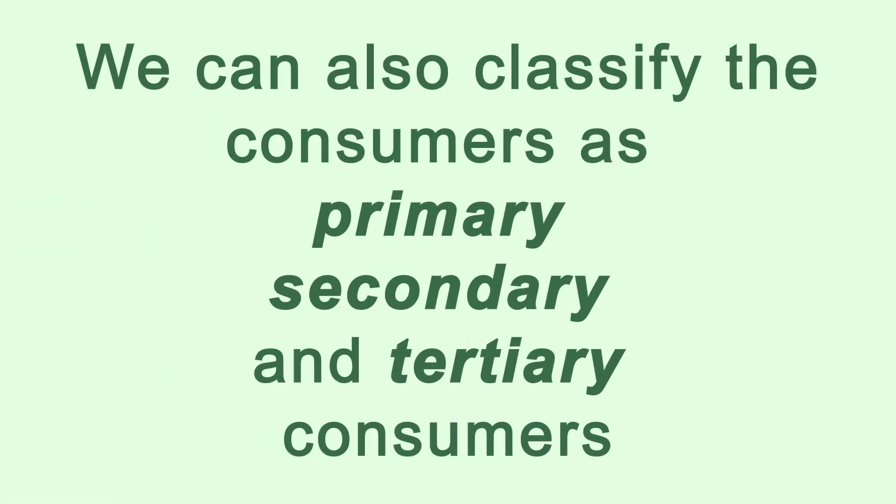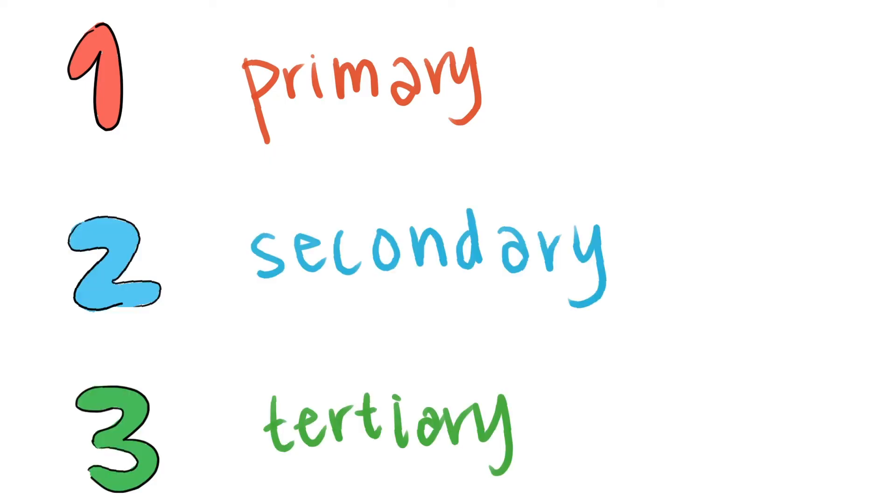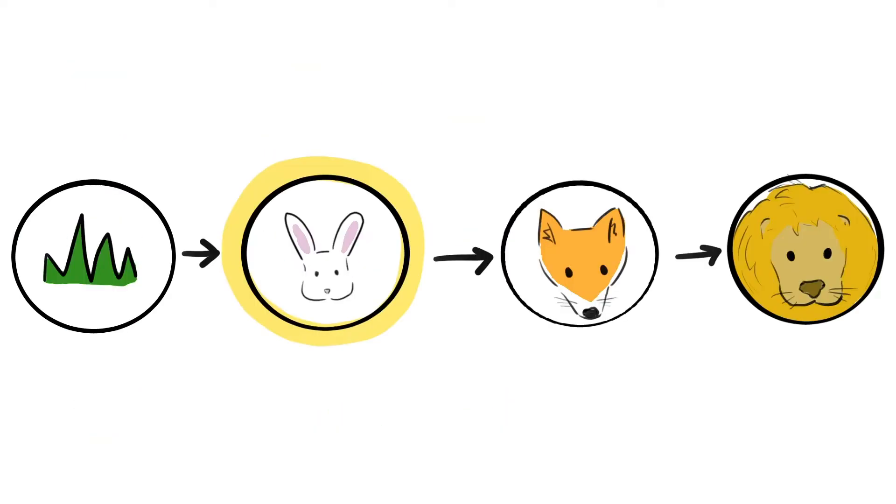We can also classify the consumers as primary, secondary, and tertiary consumers. It's important to remember that primary means first, secondary means second, and tertiary means third. If we know this, then we can label the rabbit as the primary consumer because it's the first consumer that eats the producer, which is the grass.